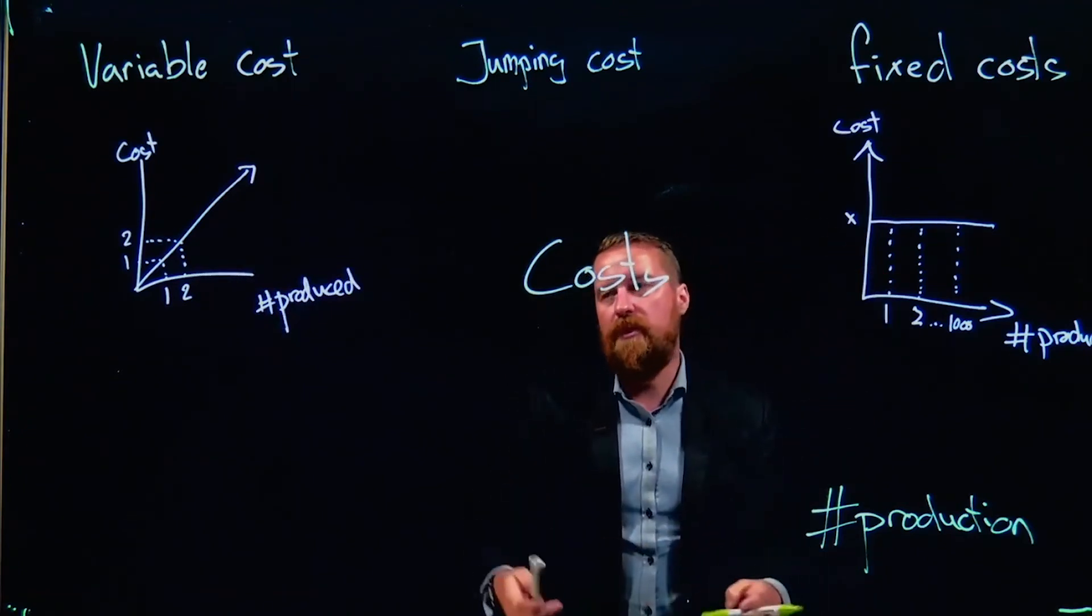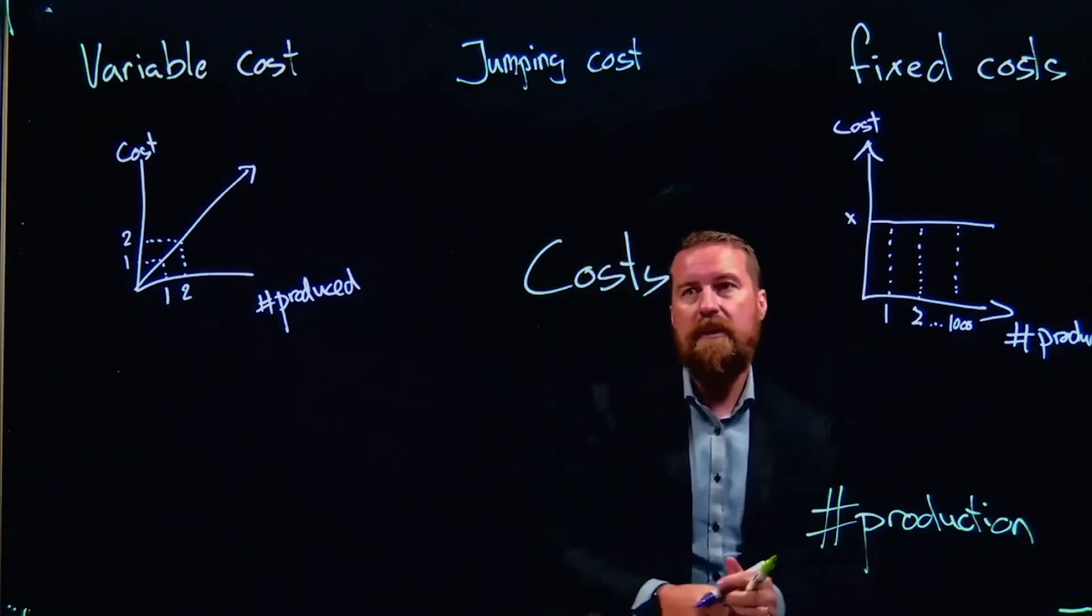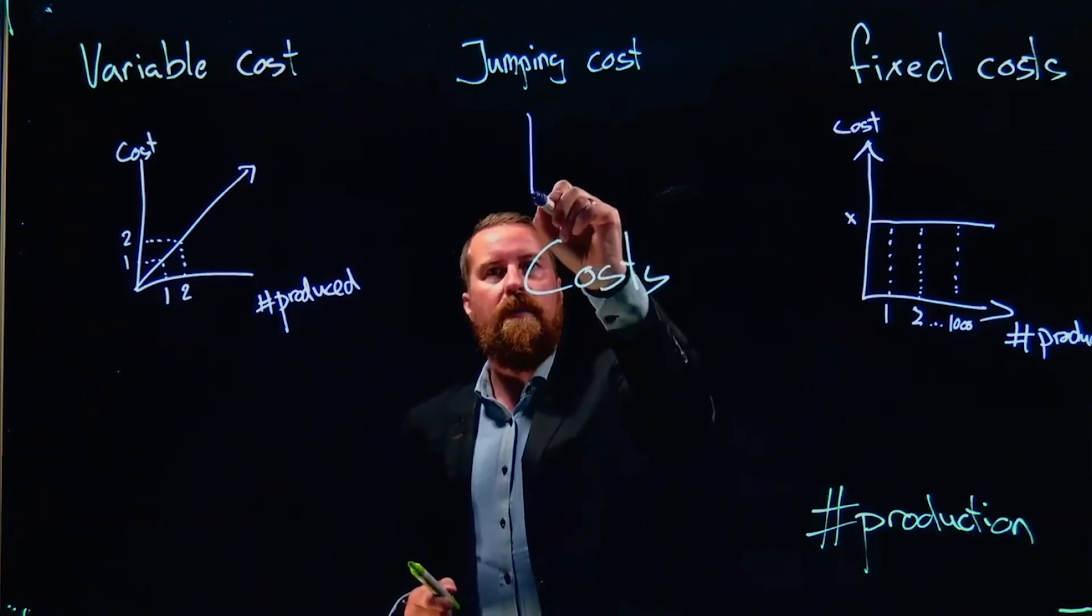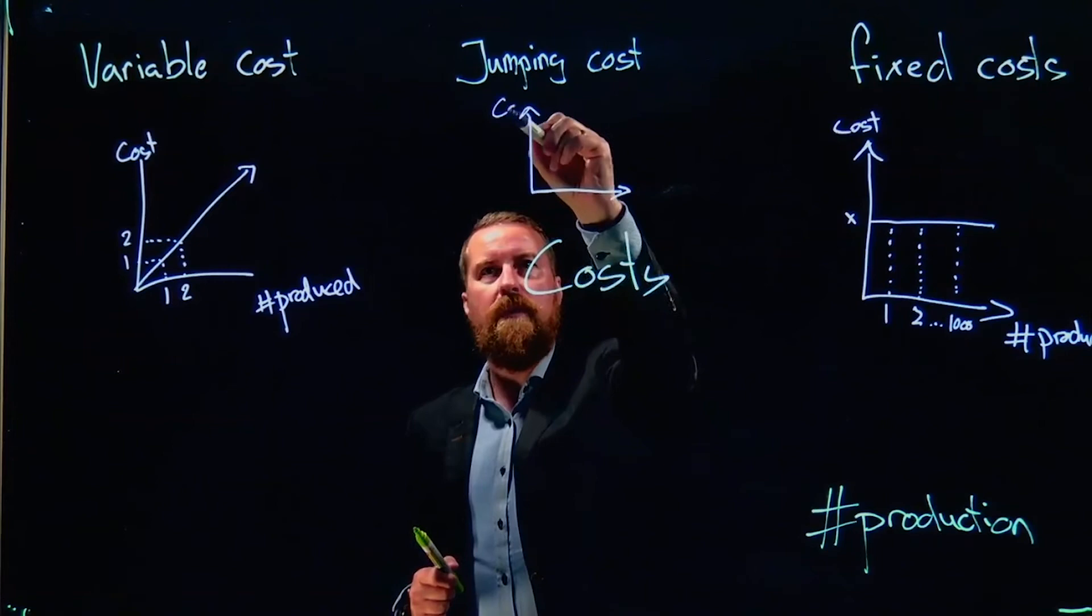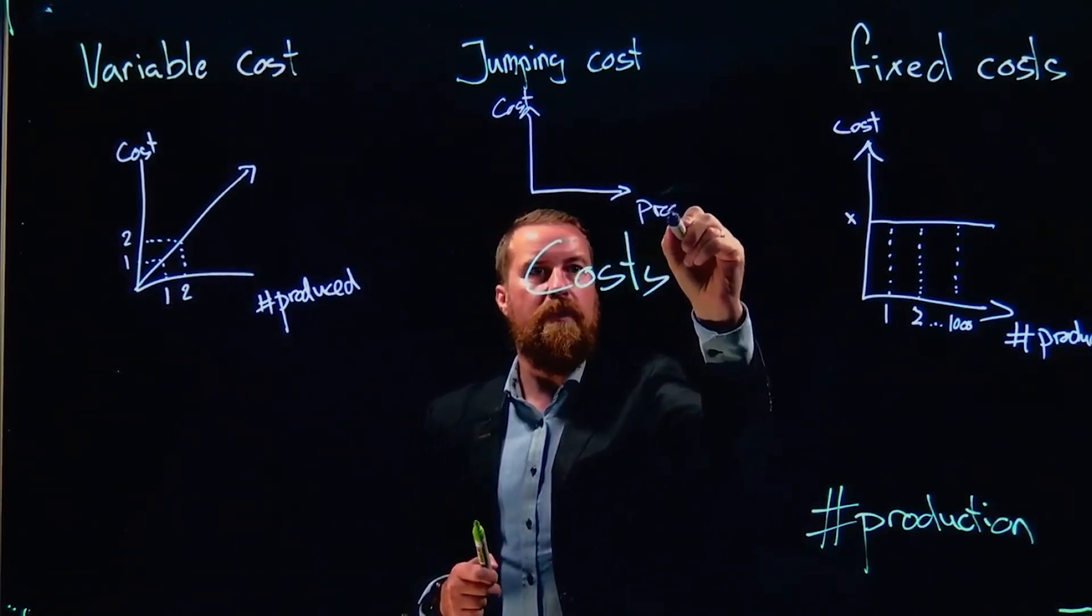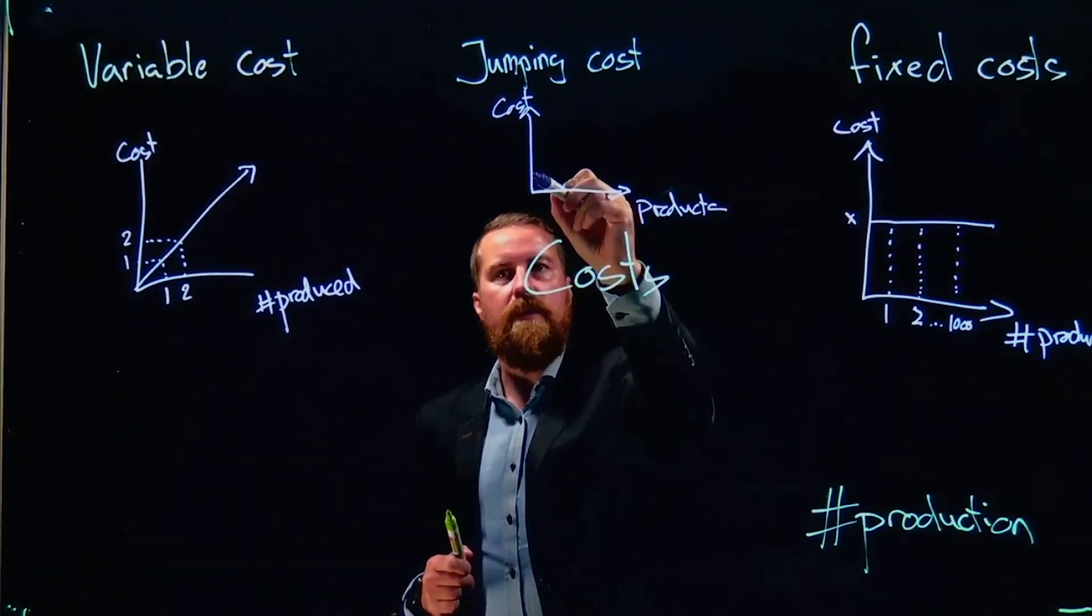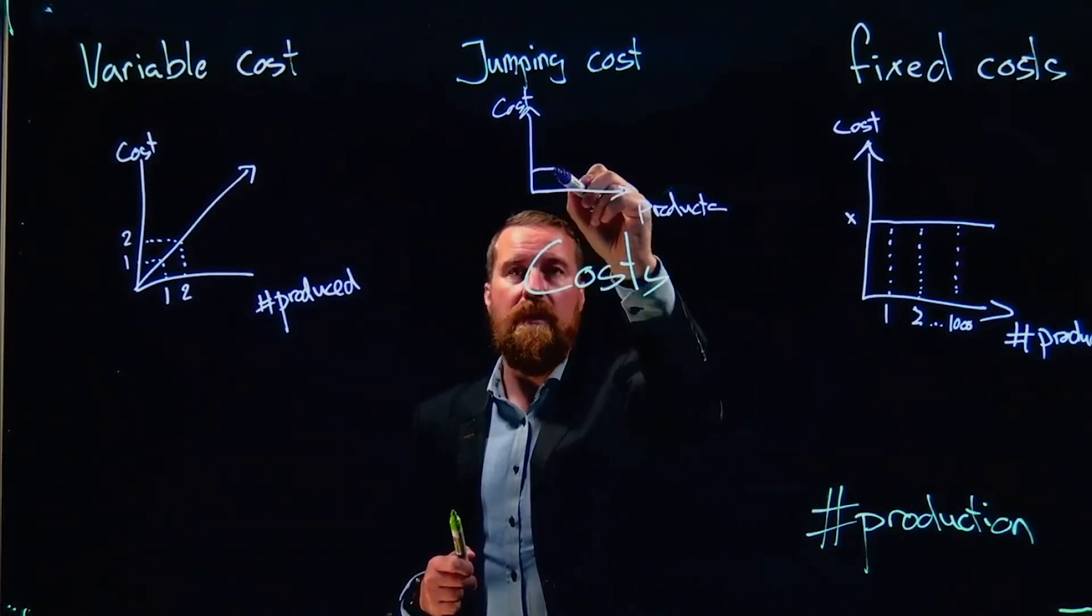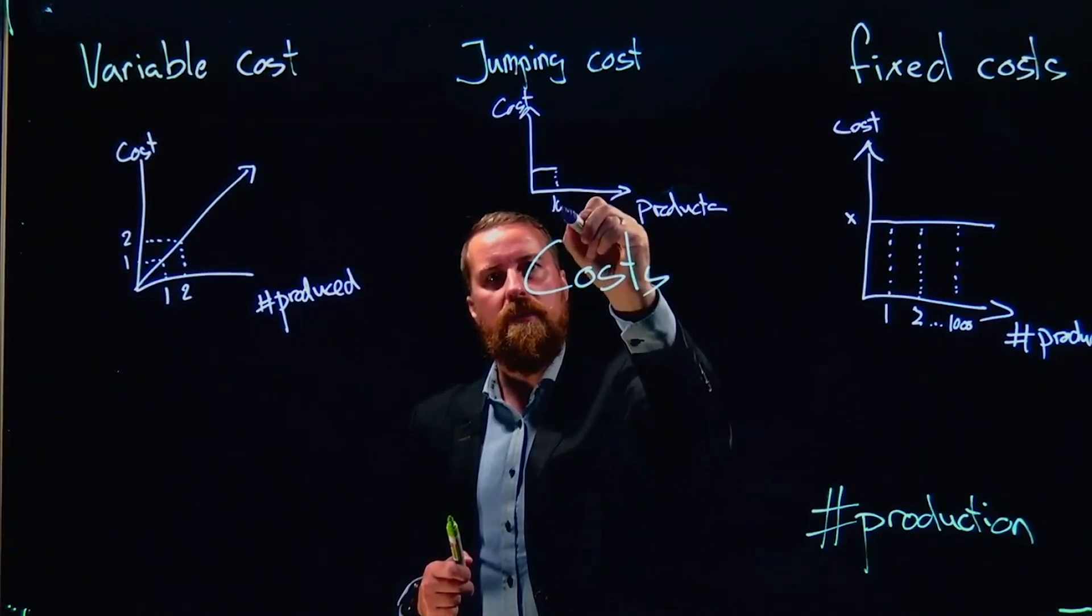Say we have a machine. A machine can produce a thousand units. So we're looking at a graph that looks like that, costs up here again, number of products, and we start with buying the machine.